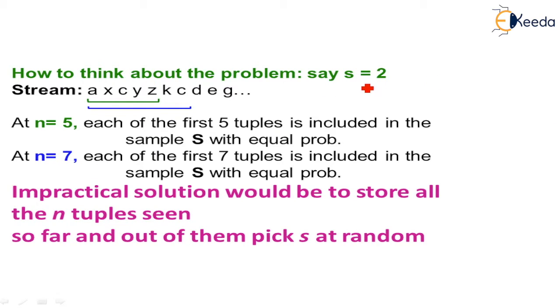So we have S equals to 2 initially. Now this is the stream where A, X, C, Y, Z, K, C, T, G is there and stream is continuous. So initially at N equals 5, we are selecting the 5 elements A, X, C, Y, Z. Each of the first elements is included in the sample S with equal probability. As stream is processing, we got N equals to 7. So now we added two previous elements K and C. Gradually in the future D, E, G will come and some elements will definitely come. So we have a fixed size and from that we will select the elements based on the S by N probability. Impractical solution would be to store all the n-tuples which is not possible. We cannot store all elements all together. We have to decide some window. So for and out of them picks S at random. We have to select it randomly.